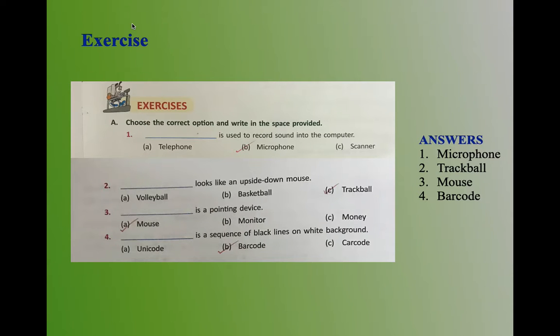Now we will check the exercise of this chapter. We will start with set A: Choose the correct option and write in the space provided. First question: Dash is used to record sound into the computer. The answer is B, microphone. Second question: Dash looks like an upside down mouse. The answer is C, trackball.